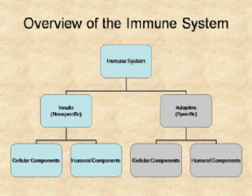Here's the diagram we've seen before showing how we break the immune system down. We'll be talking mainly about the cellular components here, and then in the next hour we'll talk about those humoral components.